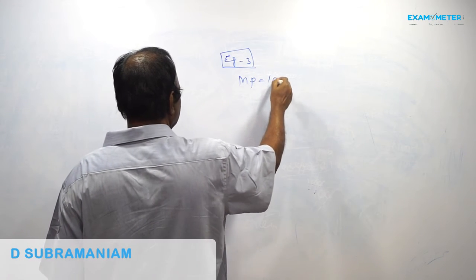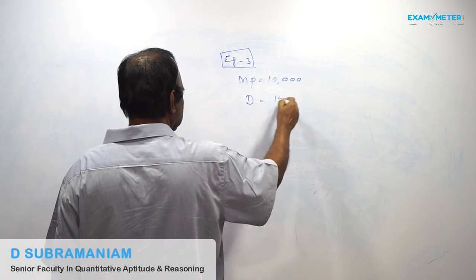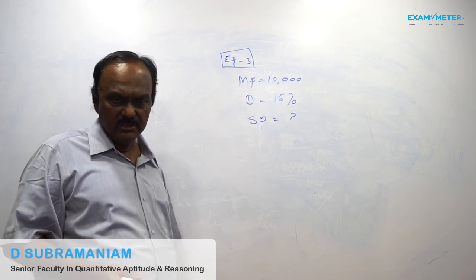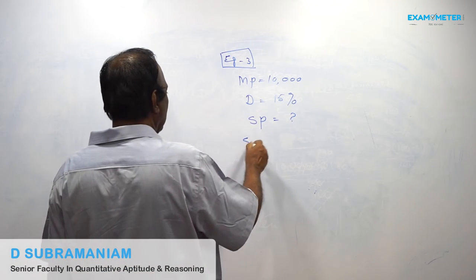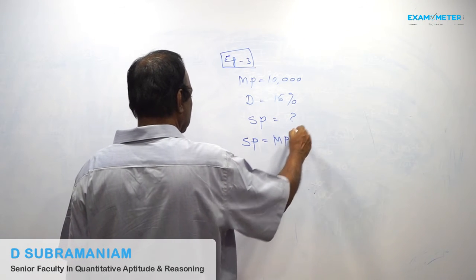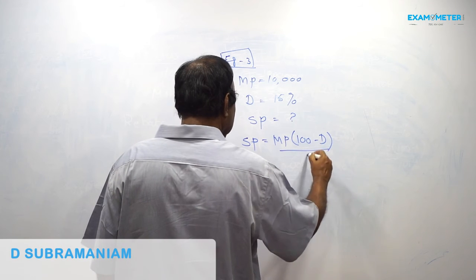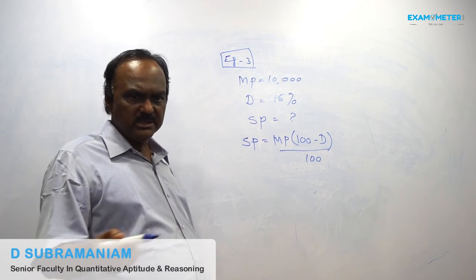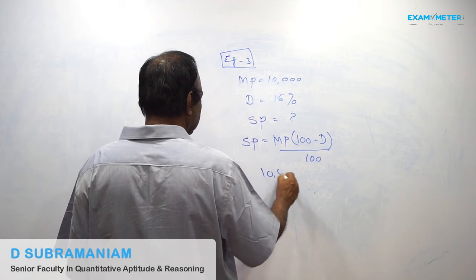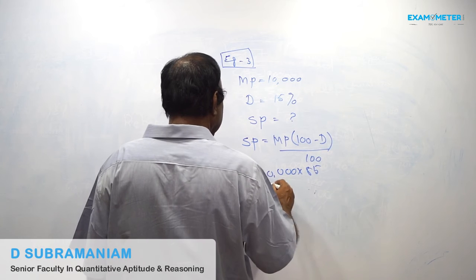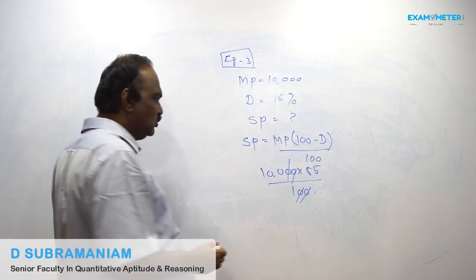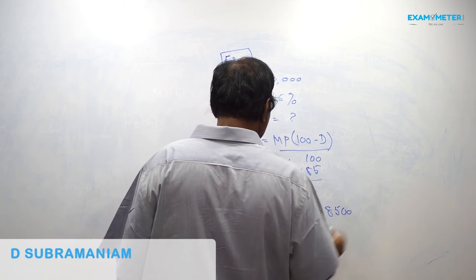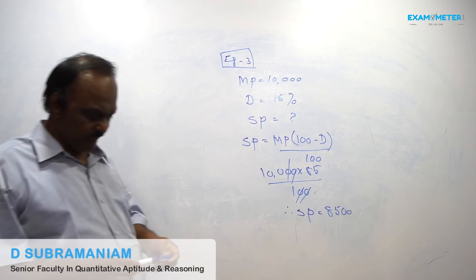Example number three: Marked Price is ten thousand, Discount is 15%. Find out the Selling Price. Apply Formula number 5: SP = MP × (100 − D%) / 100 = 10,000 × 85 / 100 = eight thousand five hundred. Therefore, the Selling Price is eight thousand five hundred.